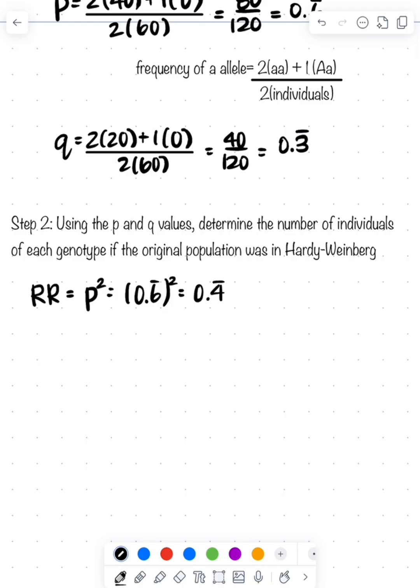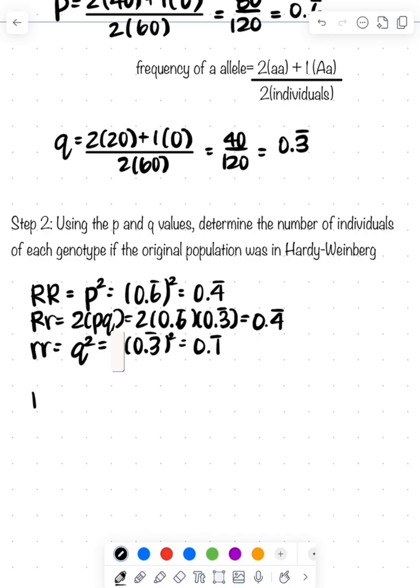My heterozygous is two times P times Q, so that's going to be two times 0.6 repeating times 0.3 repeating, which gives me 0.4 repeating. And then my homozygous recessive is Q squared, which is 0.3 repeating squared, giving 0.1 repeating.